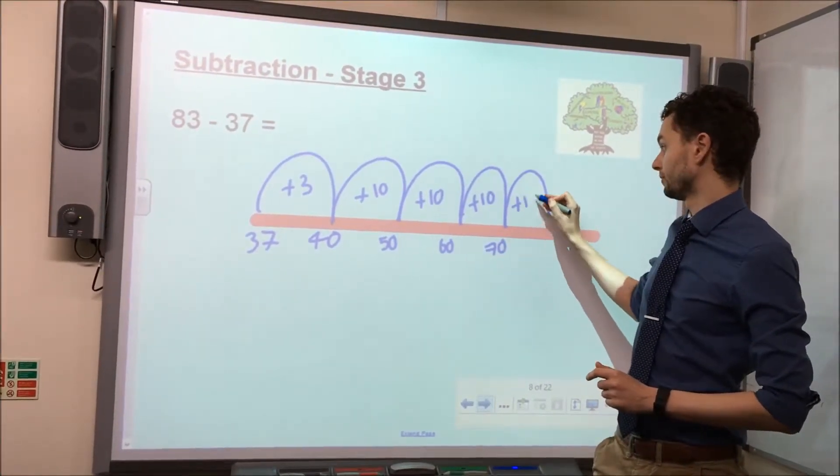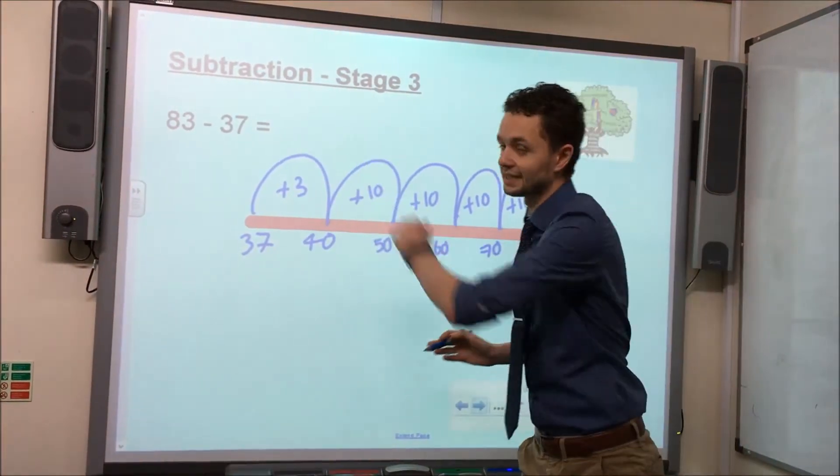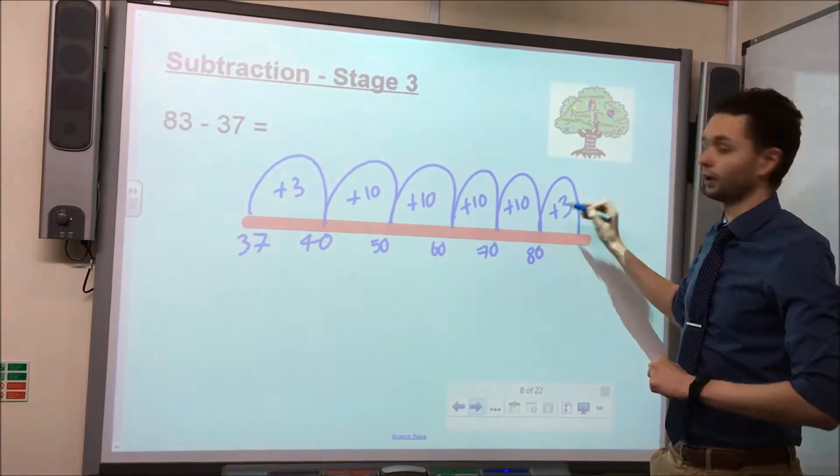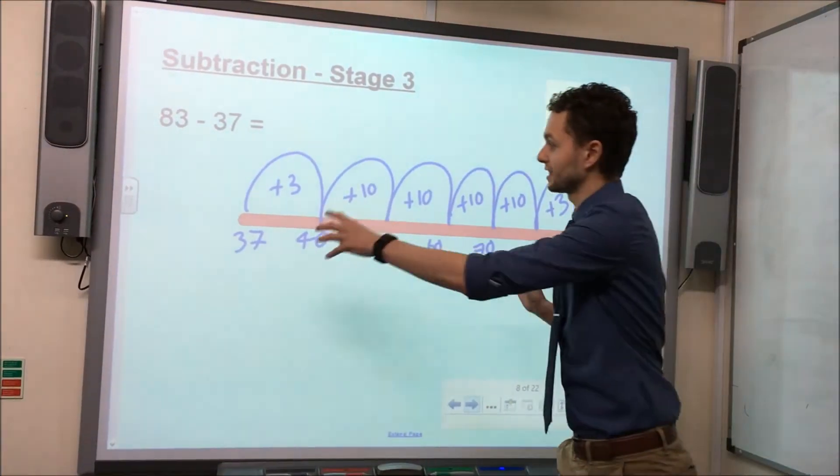A final jump of 10 takes us to 80. And then we can see to get to our target number of 83, we need to take a jump of 3.